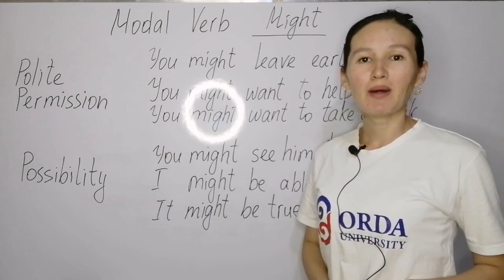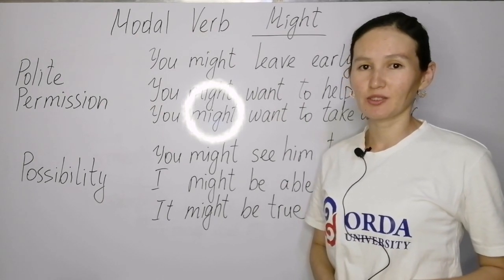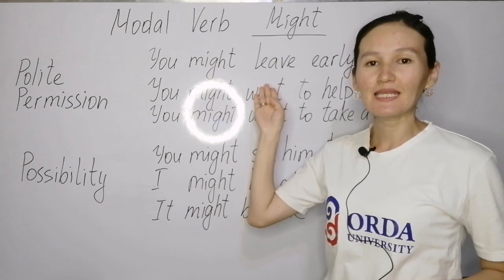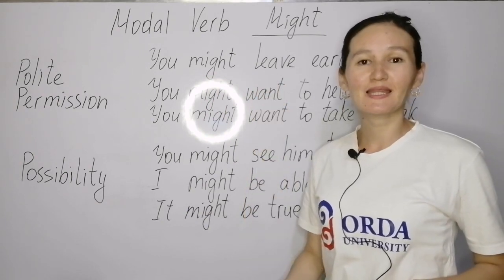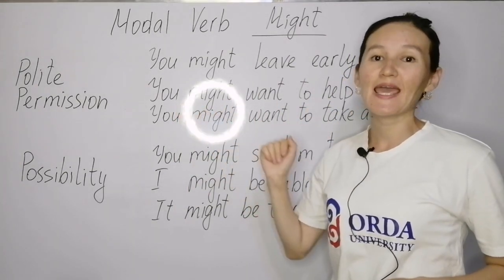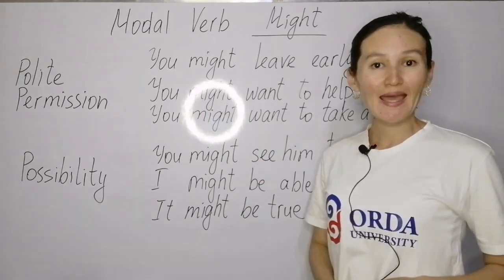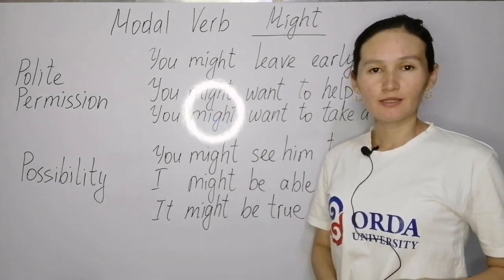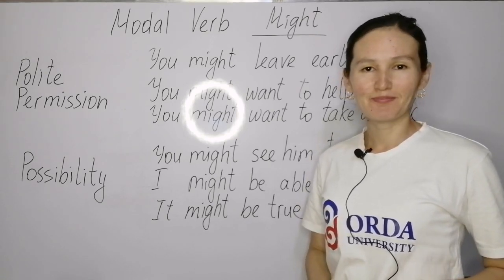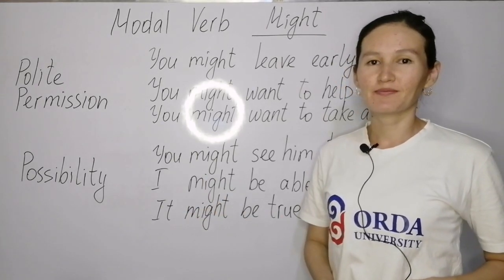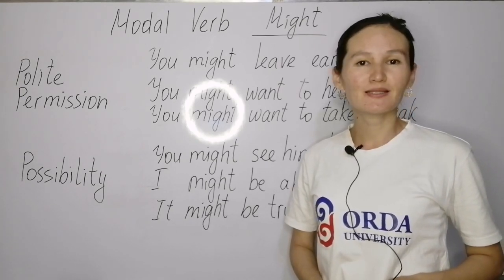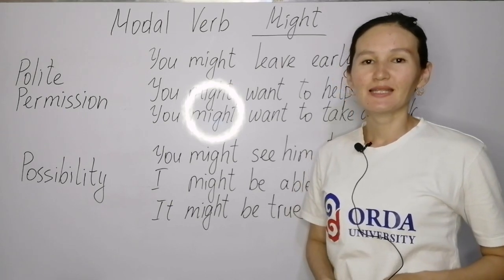Now let's take a look at some sentences showing polite permission. 'You might leave early' — might plus bare infinitive 'leave.' Another example: 'You might want to help him' — might plus bare infinitive 'want.' And: 'You might want to take a break' — again, might plus want.